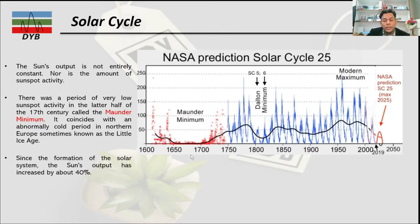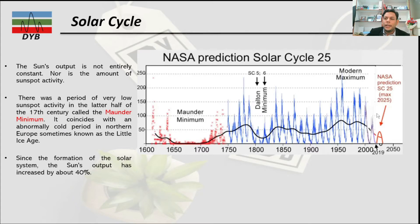The Maunder Minimum affected regions in northern Europe, causing very cold temperatures due to low sunspot activity. After the 17th century, activities gently changed rather than changing drastically. NASA has predicted that there will be a period of low solar activity happening around 2025.